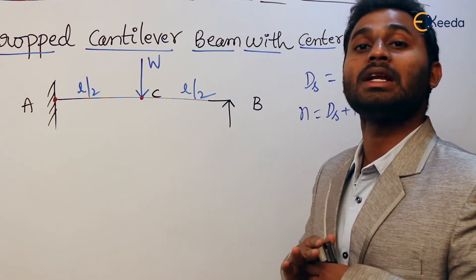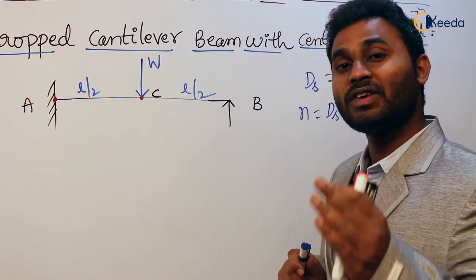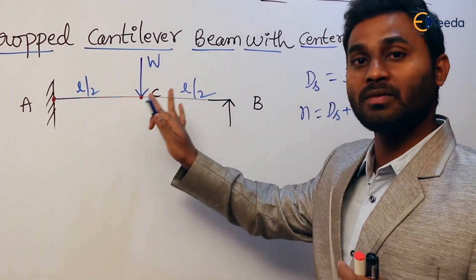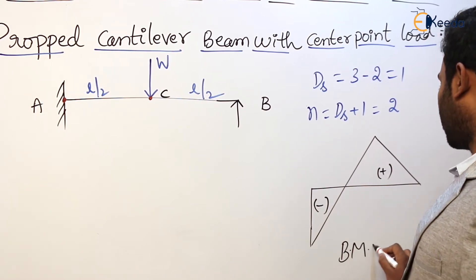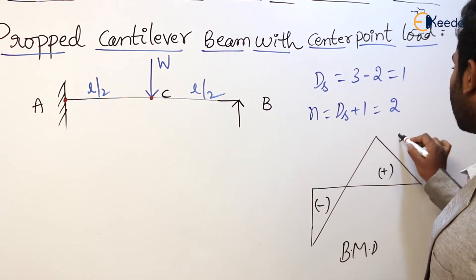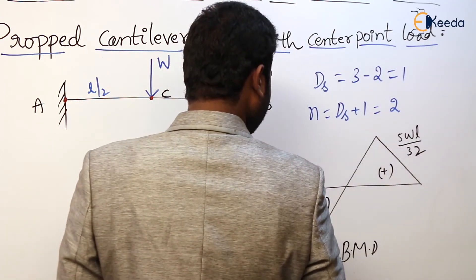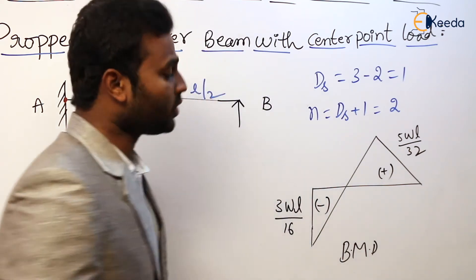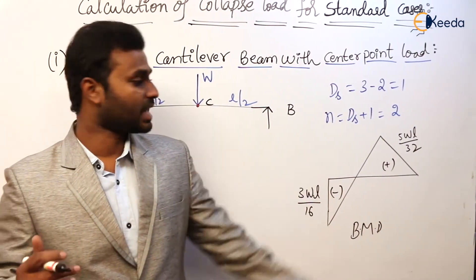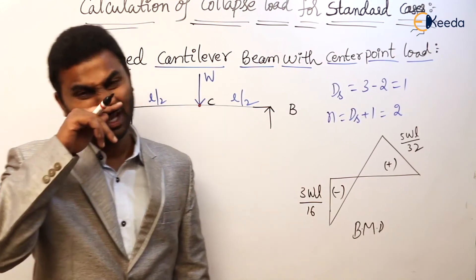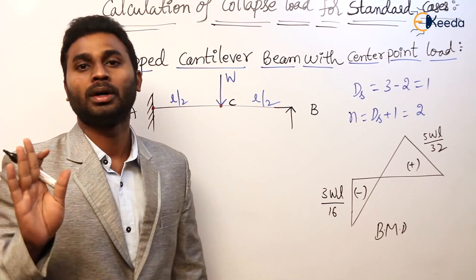We decide the sequence — whether the hinges form simultaneously or sequentially — based on the bending moment diagram. For the proper cantilever beam with center point load, the BMD shows a hogging moment of 3WL/16 at the fixed support A and a sagging moment of WL/32 at center C. Since the hogging bending moment at the fixed support is larger, the first plastic hinge forms there, followed by the second at C.